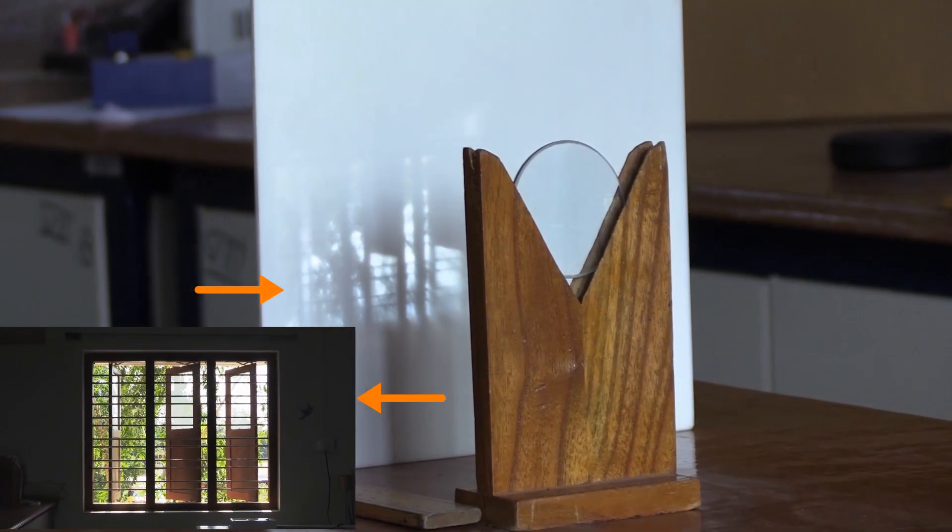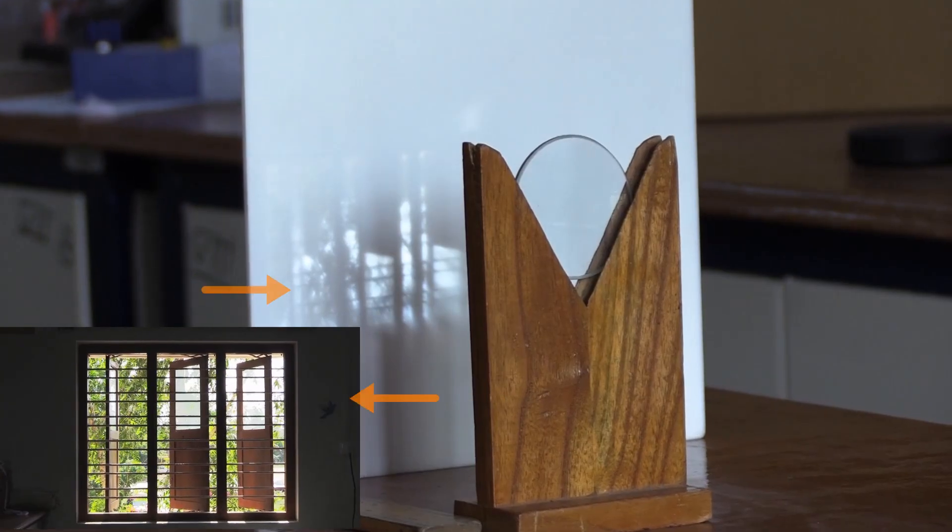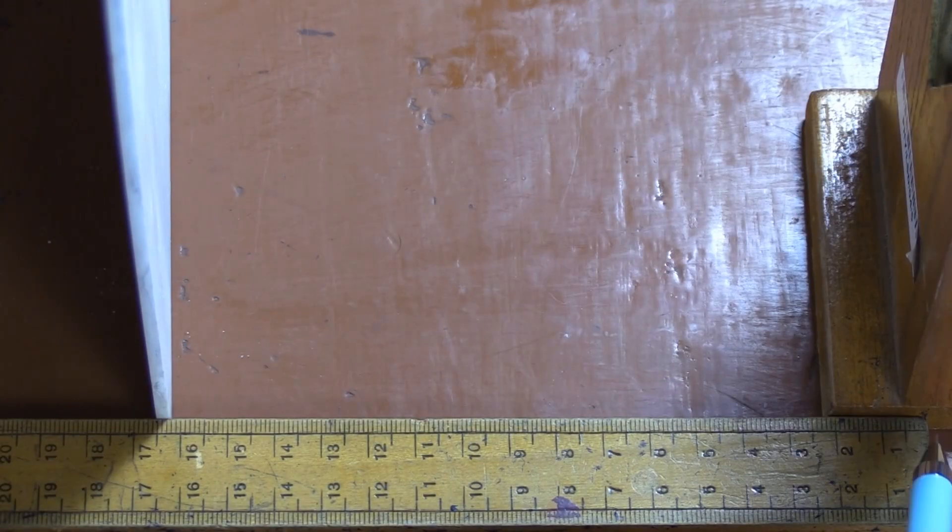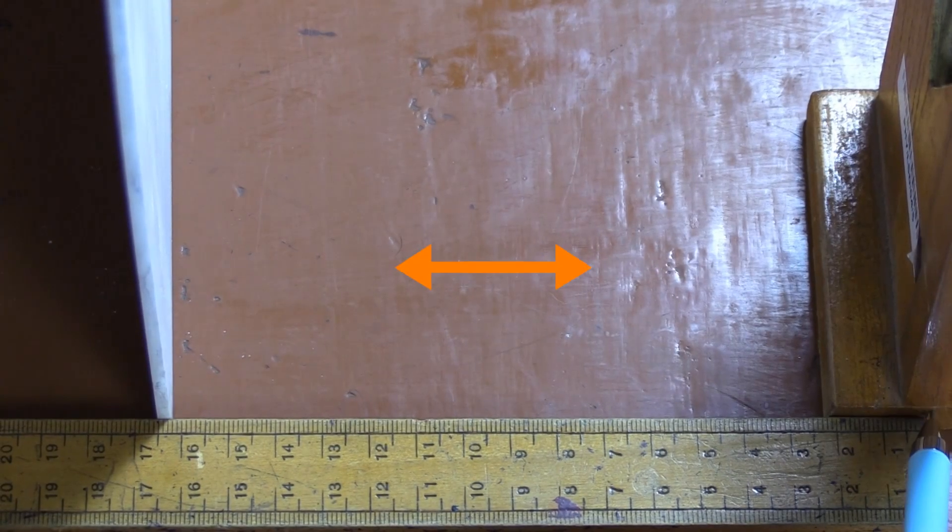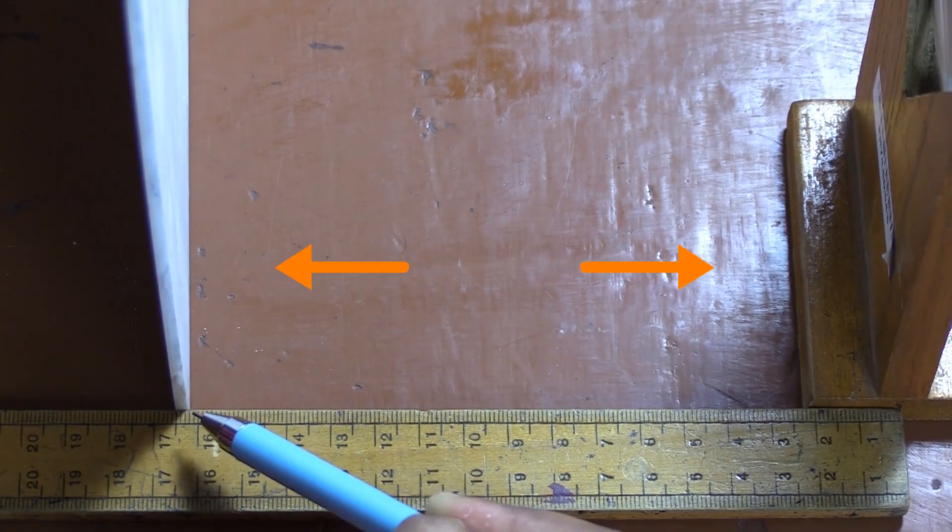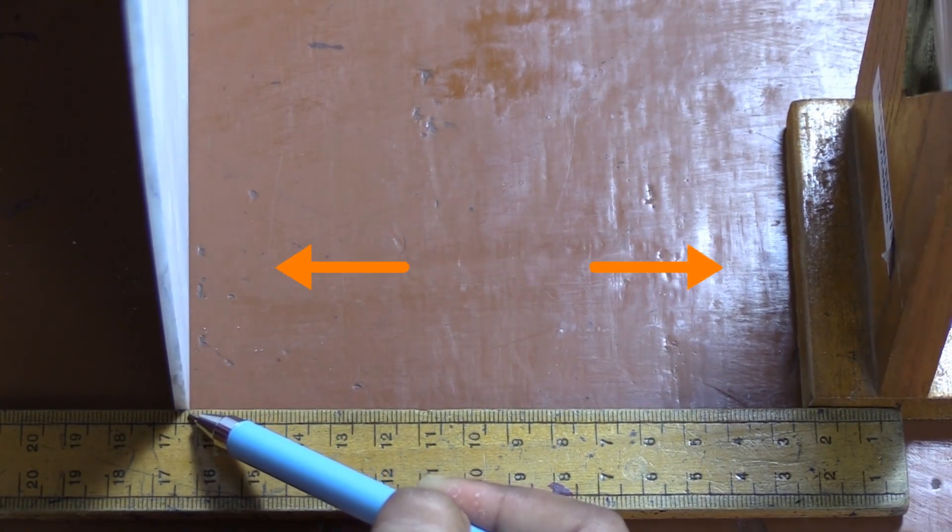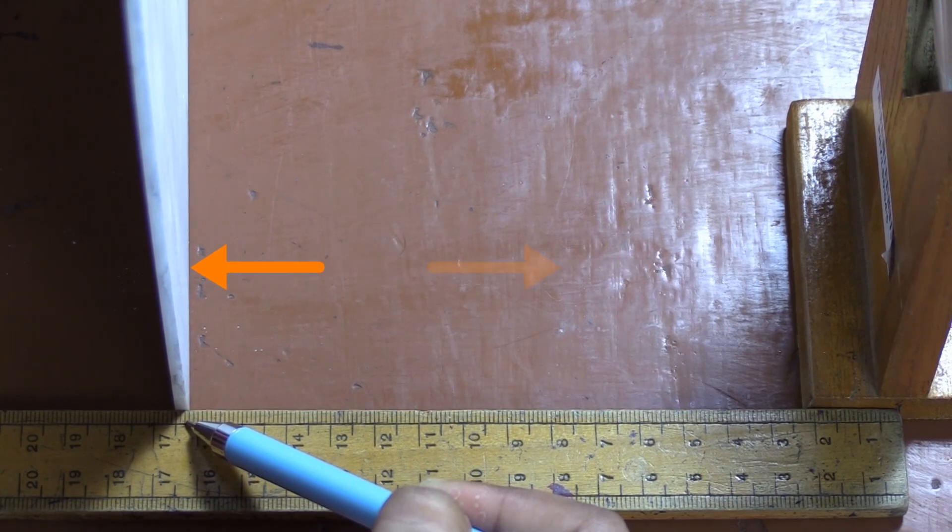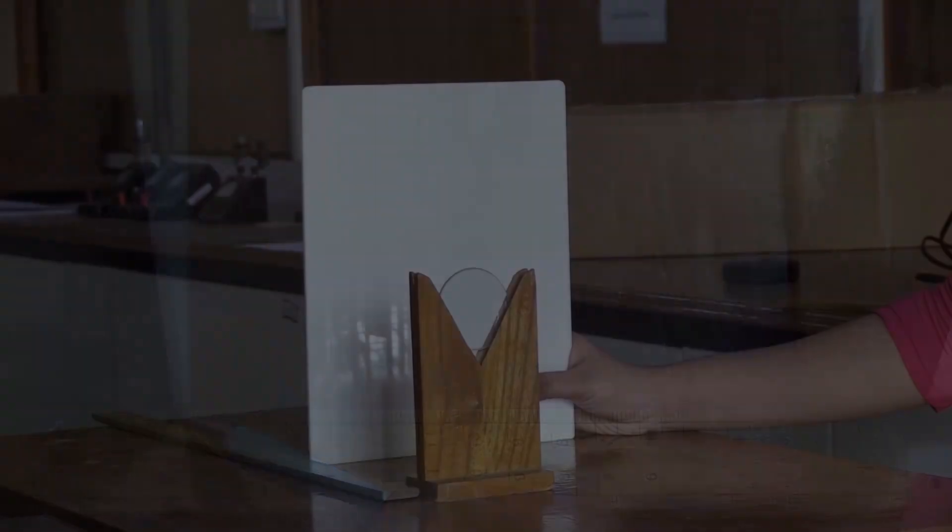Measure the distance between the screen and the optical center of the convex lens. Use a measuring scale. Record the observation as the focal length of the lens.